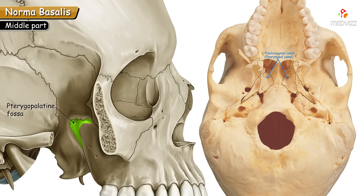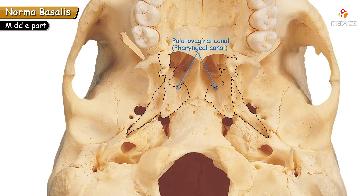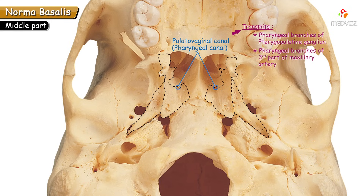The pterygopalatine fossa contains the pterygopalatine ganglion. The palatino-vaginal canal transmits branches from the pterygopalatine ganglion and branches of the maxillary artery — specifically the pharyngeal branches of the third part of the maxillary artery.